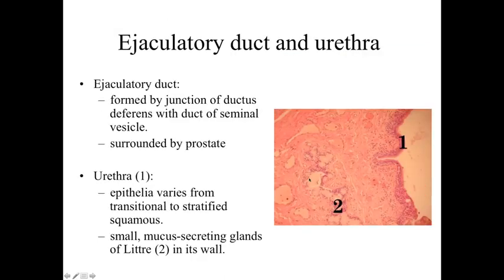This then goes through a series of ducts into the ejaculatory duct, which is formed by the junction of the ductus deferens and the duct from the seminal vesicle. It passes through the prostate gland and ultimately goes into the urethra. Within the urethra, we're going to go from a transitional epithelium, like we saw within the urinary system, to a stratified squamous epithelium. There are also small mucus-secreting glands of Littre in the wall to neutralize the urine present there, because this is a genitourinary passageway — a passageway for sperm but also for urine. Urine in this location would be damaging to sperm cells, so we have to neutralize the effects of urea and other factors in the urine.